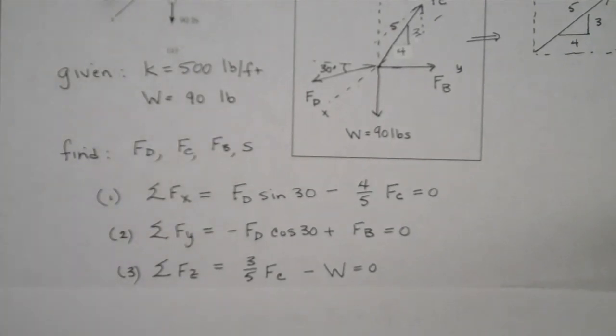Looking at our free body diagram, we can do our summation of forces. In the X direction we see the summation of forces: we have FD sine of 30 pulling in the positive X direction, negative 4 fifths FC in the negative X direction. And again that comes from our triangle. 4 fifths of that is going to be in that direction. And because we're in equilibrium, when we add all those forces we should get zero.